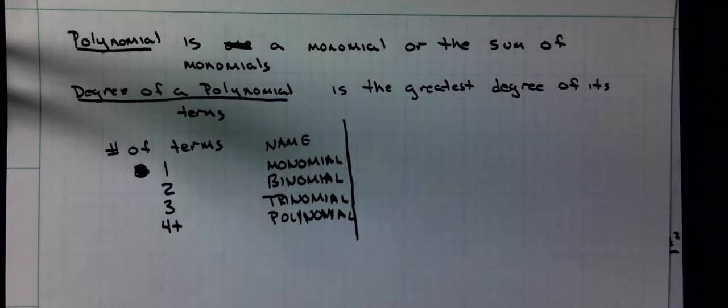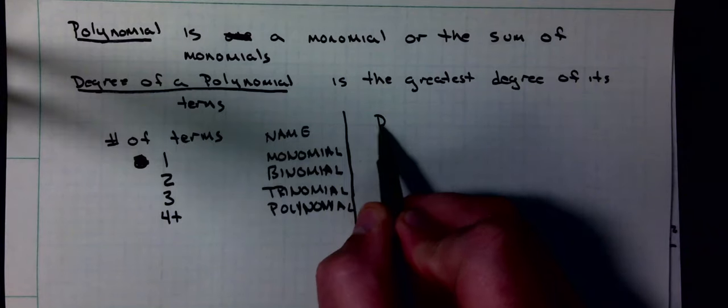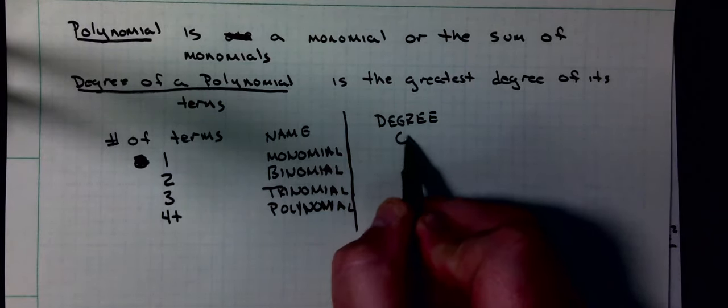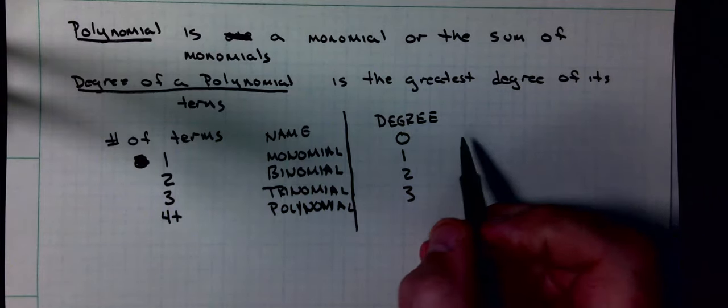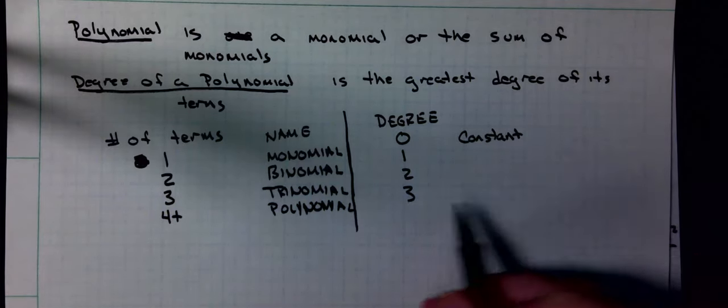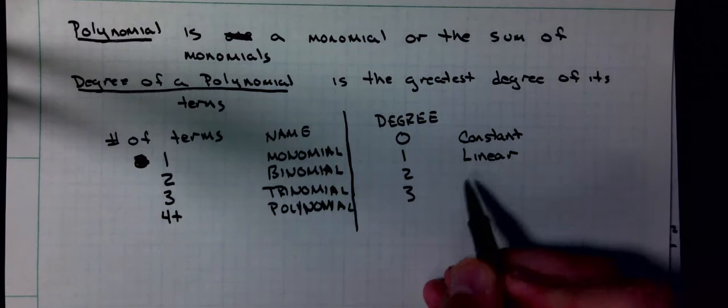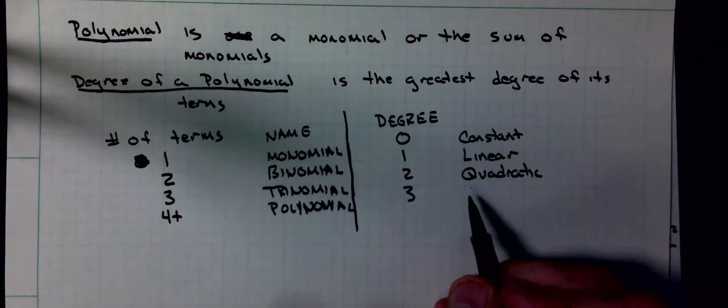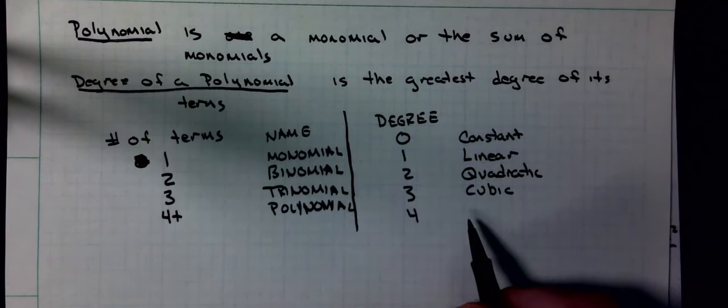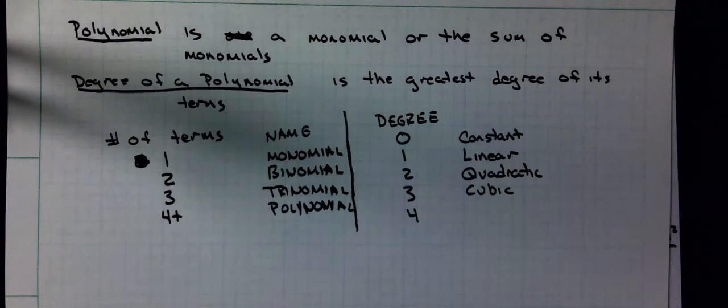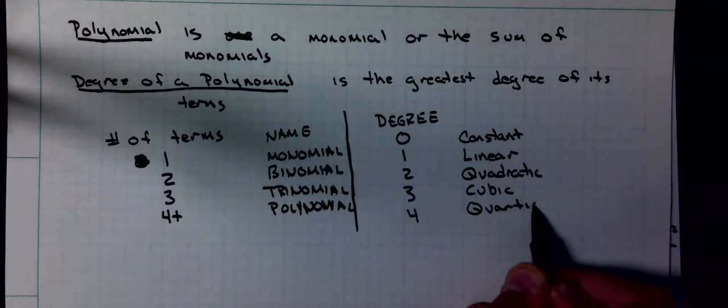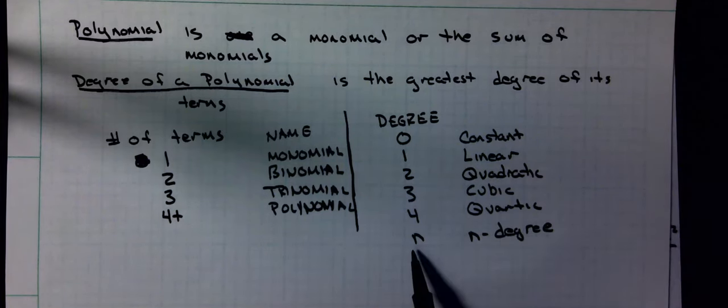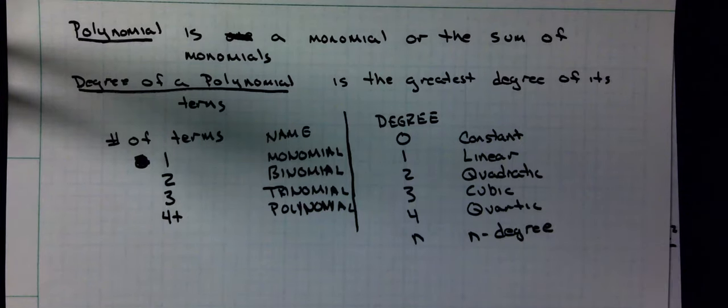The second way we can classify them is by their degree. Zeroth degree, we call a constant. First degree is linear. Second degree is quadratic. Third degree we call cubic. Fourth degree is quartic. And so on. We could also say, hey, whatever the number is, it is an n-degree polynomial. If I have a five, it would be a fifth degree polynomial. Two different ways that I can classify them.